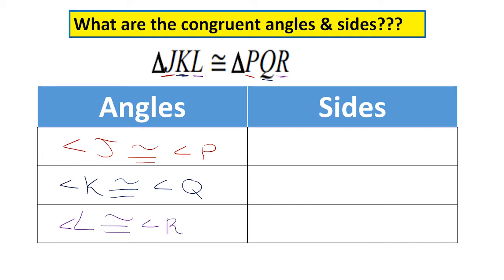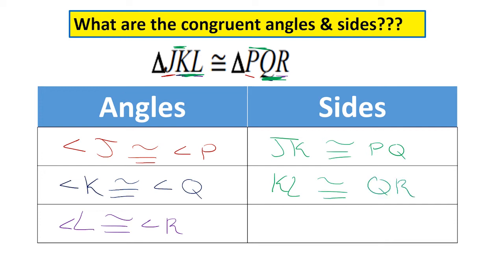Now let's look at the sides. JK is in the same position as PQ — the first two letters — so side JK is congruent to side PQ. KL is in the same position as QR — the last two letters — so side KL is congruent to side QR. JL and PR use the first and third letters, so side JL is congruent to side PR. We've matched all congruent corresponding angles and sides.